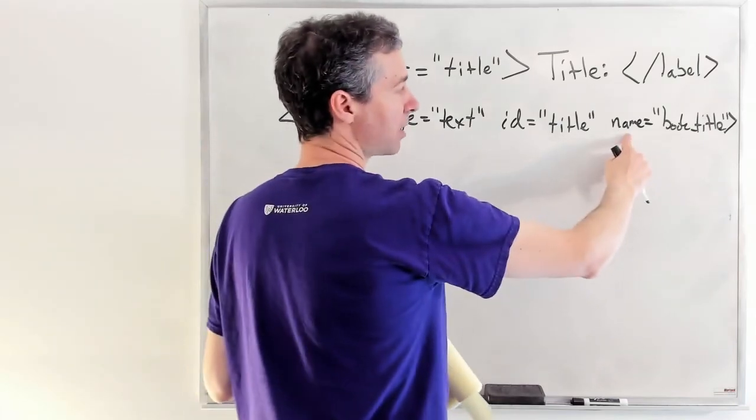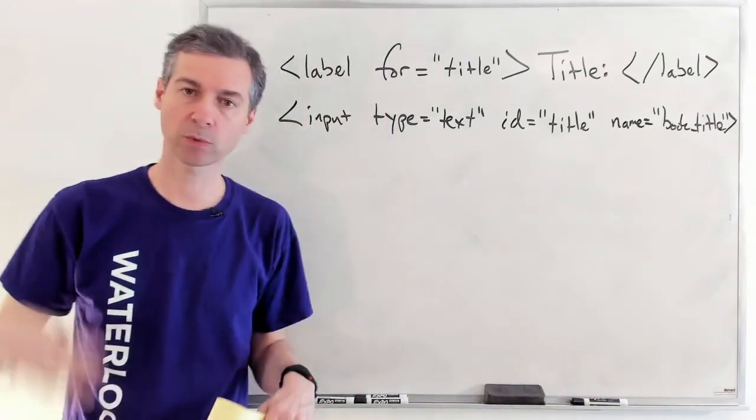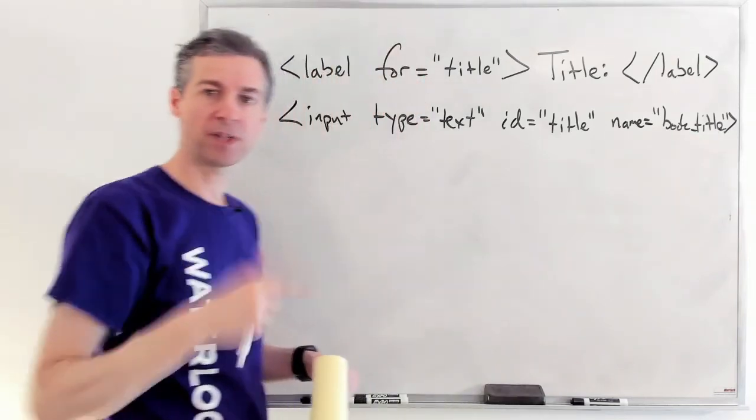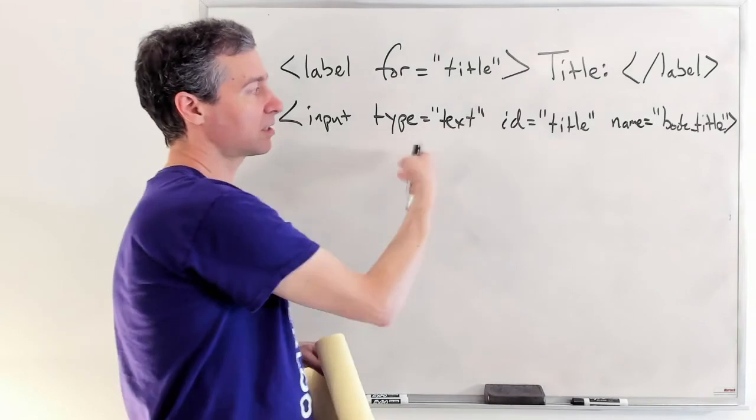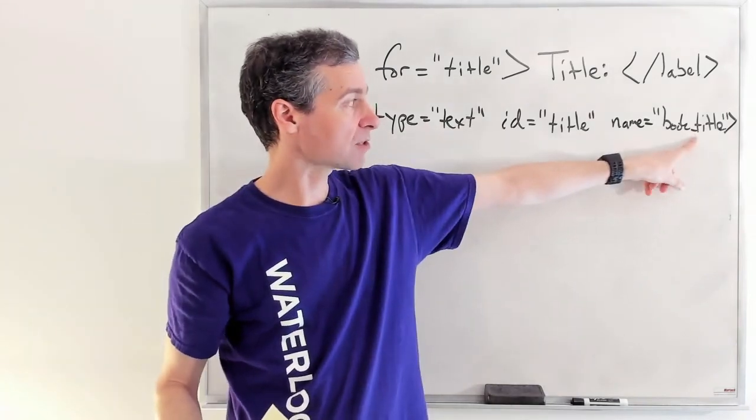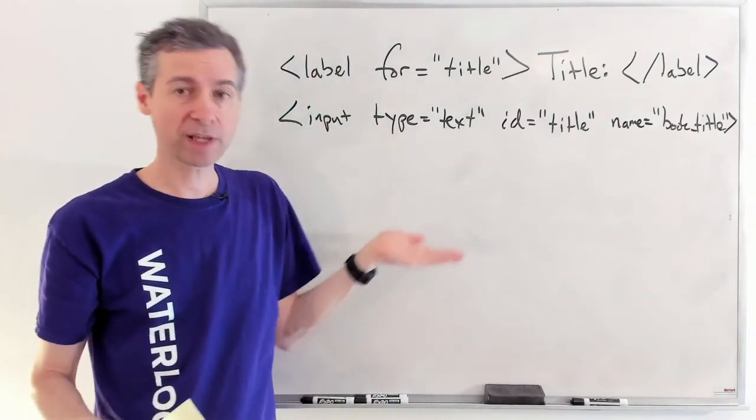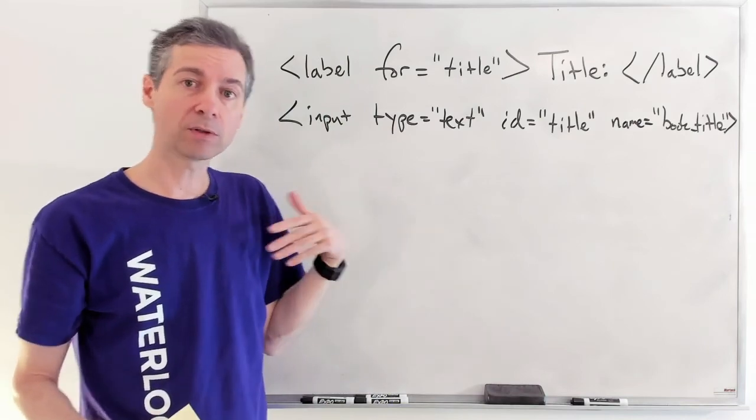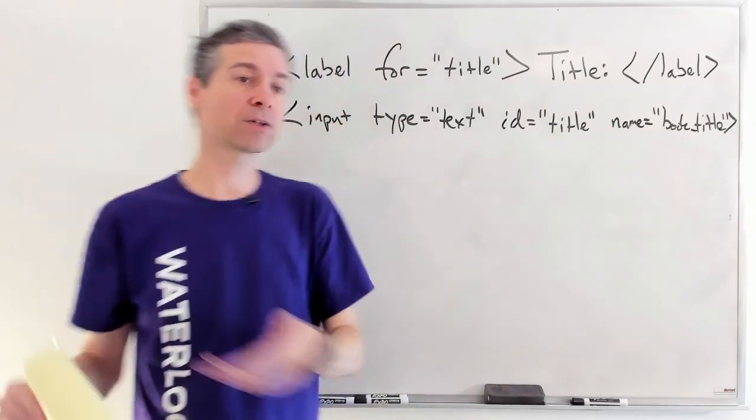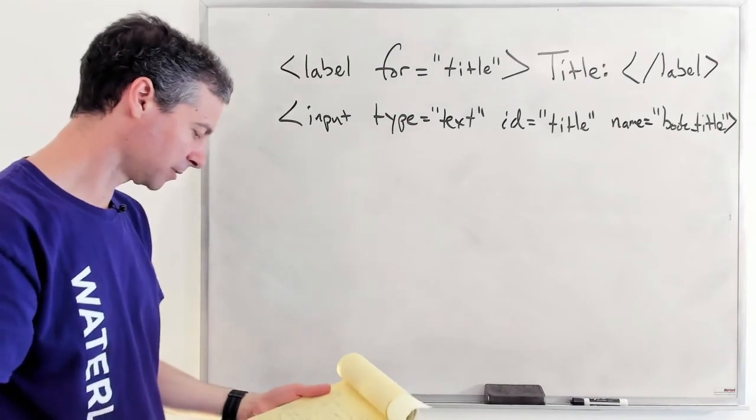And so what we'll see when this displays is we'll see a title and then we'll have a box next to it, which allows us to type in some text. This name, this name is what goes with the params. So when we hit the form submit, this name becomes the name of the name value pair. The data that the user types in becomes the value. And so this is our way of specifying, oh, when I get the form and I want to know what they typed into my text field here, I will go ask the params hash for the book_title and the value will be what the user typed in.